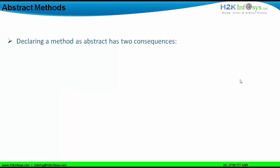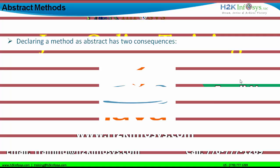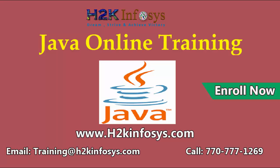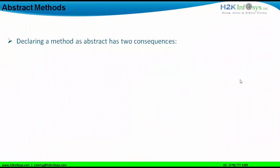When declaring an abstract method, ensure that it is declared within an abstract class. You cannot declare an abstract method in a class which is not abstract. Secondly, an abstract method has to be non-static — you cannot have a static abstract method. The reason is that an abstract method must be implemented in the class which is inheriting the abstract class.